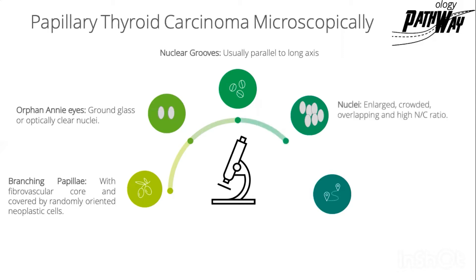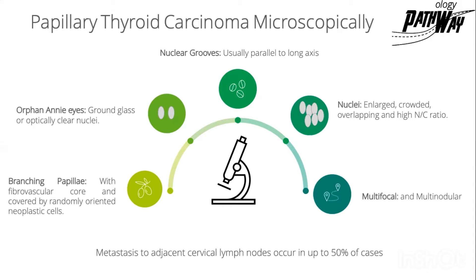Number four, the nuclei are usually enlarged, crowded, not respecting each other, overlapping, and have a high nuclear-to-cytoplasmic ratio. Number five, the cancer is usually multifocal and multinodular. Metastasis to adjacent cervical lymph nodes occurs in up to 50% of cases.